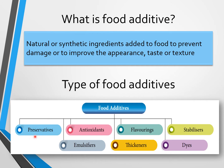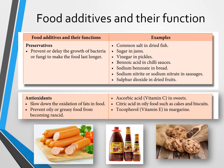The seven types of food additives are: number one, preservatives; number two, antioxidants; number three, emulsifiers; number four, flavoring; number five, thickeners; number six, stabilizers; and number seven, dyes. Now we look at each type and their functions.